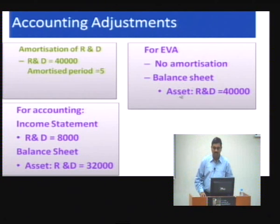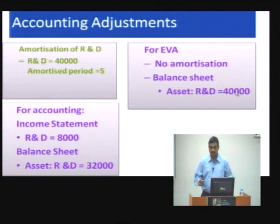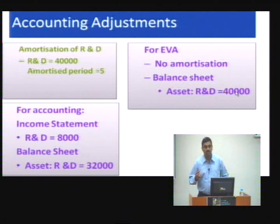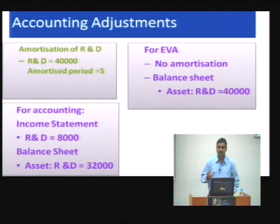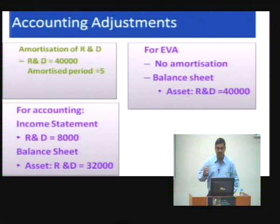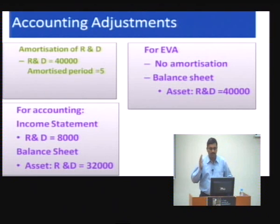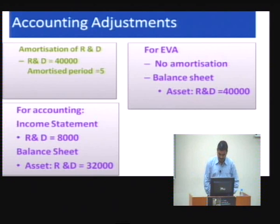For EVA, amortization is not allowed. Instead, you impair the asset rather than amortize it. So for EVA, the R&D asset is shown at 40,000 as long as it is not impaired. Once again, expenses go down and the asset value goes up because of the accounting adjustment.